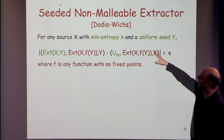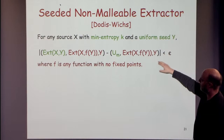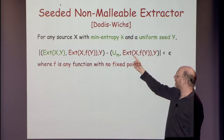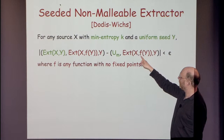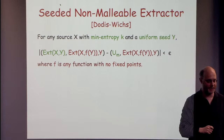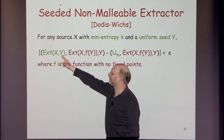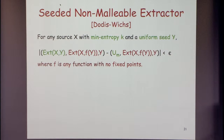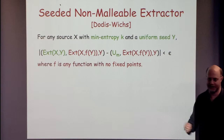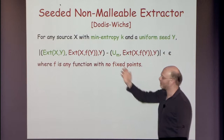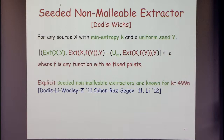Back to non-malleable codes. To define the right kind of extractor: a seeded non-malleable extractor is a strengthening of a strong extractor. In a strong extractor, we condition on the seed y. Now we also condition on the extractor output with a correlated seed f(y), where f is any function with no fixed points. We must still not be able to predict the extractor output on x and y. For example, if the extractor ignores a bit of the seed, it's not non-malleable — f can flip the ignored bit, and then extractor(x, f(y)) = extractor(x, y). It's a very strong definition.